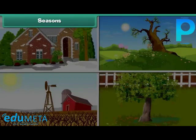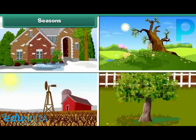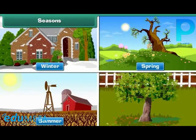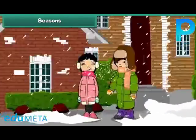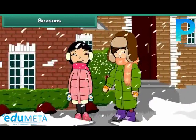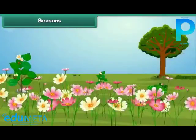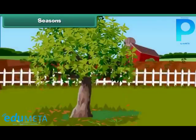Seasons. There are 4 seasons in a year. They are winter, spring, summer and autumn. In winter, we wear woolens to keep ourselves warm. In spring, flowers blossom. Summers are hot. Trees shed leaves in autumn.